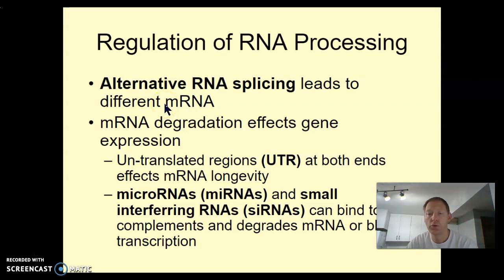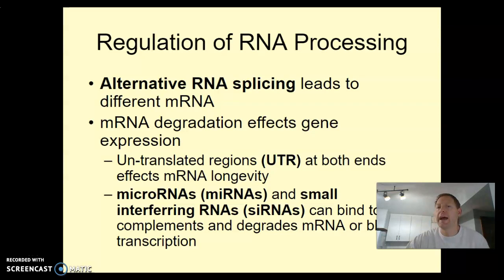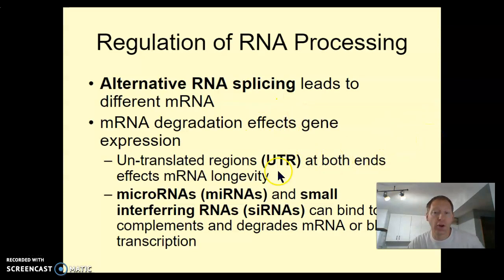We also have the idea of alternative RNA splicing. This is why we think organisms like humans are able to make such a vast quantity of proteins even though we don't have the largest genome — we can actually cut up our RNA differently and get different proteins. A good example is an antibody: antibodies have a constant region and variable regions, and we think in many cases they're coded for by one gene, but depending on how we slice up the RNA we get a slightly different version of the antibody. We also know about UTRs — untranslated regions — that may affect where the RNA goes and how long it lasts.